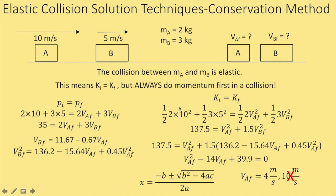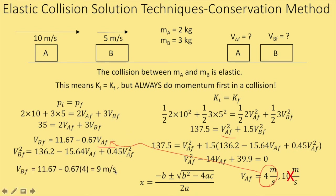Going back, 10 is Cart A's original velocity, so I don't want that answer — but it's a good sign. When you do this method for elastic collisions, you're always going to get two answers: one is the actual collision result, and one is the trivial case where there's no collision, because momentum and energy are conserved if they don't collide. So I want the answer of 4. I take the 4 and put it back into the simpler equation to get V_B final = 9. After the collision, block A slowed down from 10 to 4 m/s, still going right; block B sped up from 5 to 9 m/s, still going right.